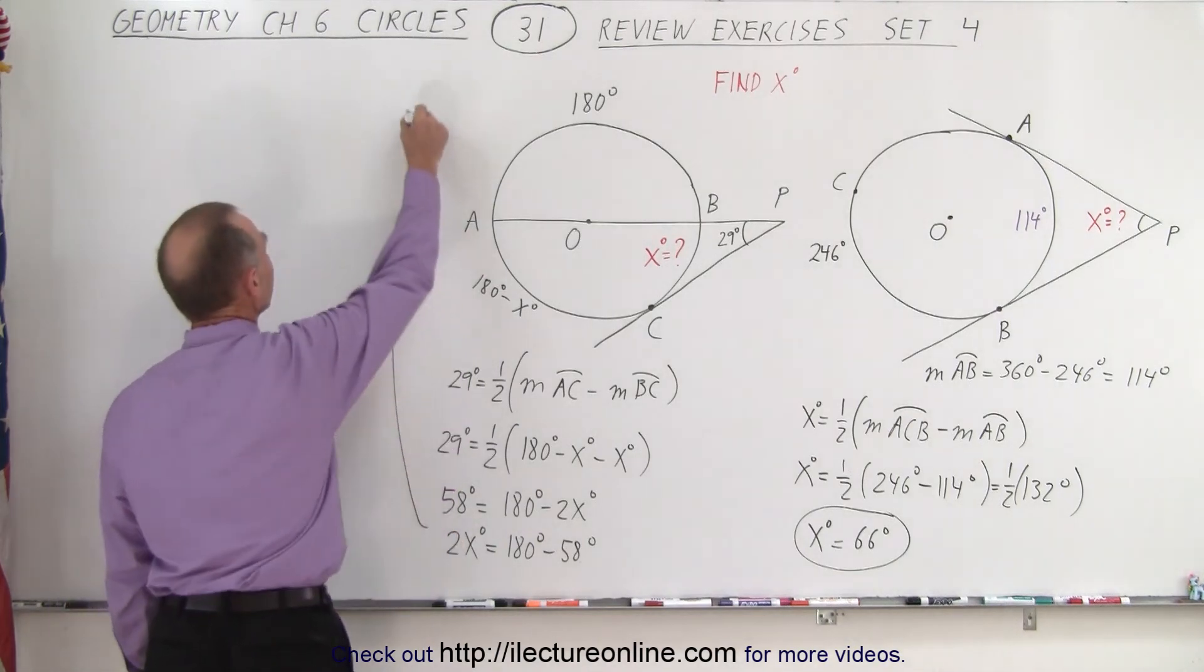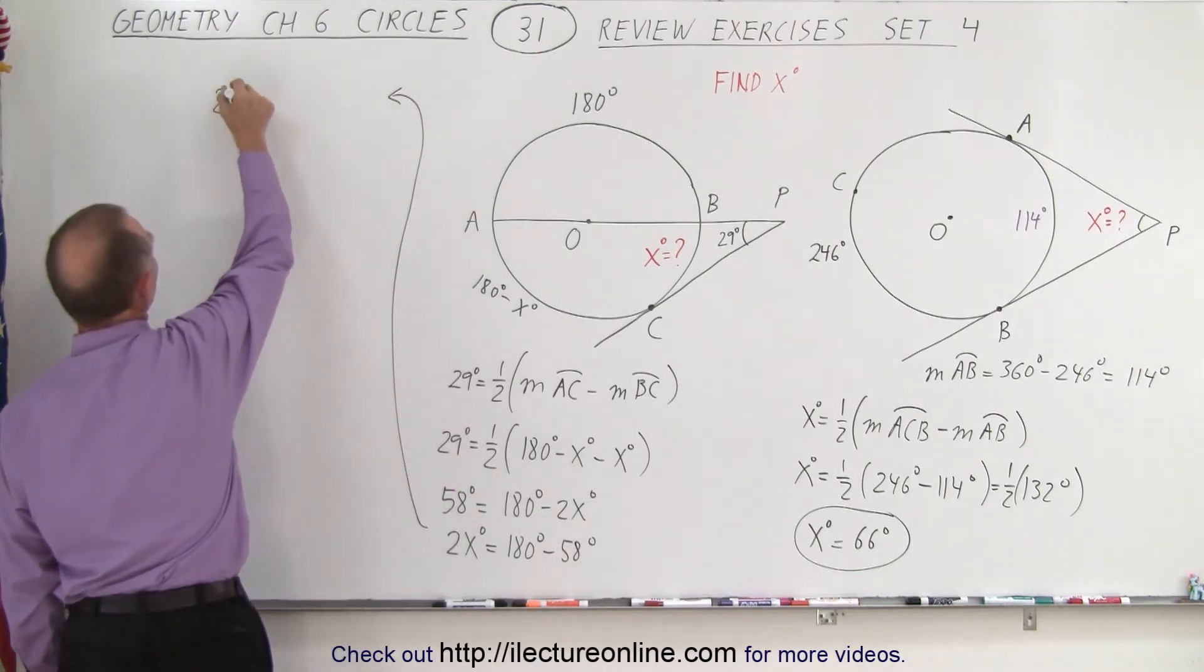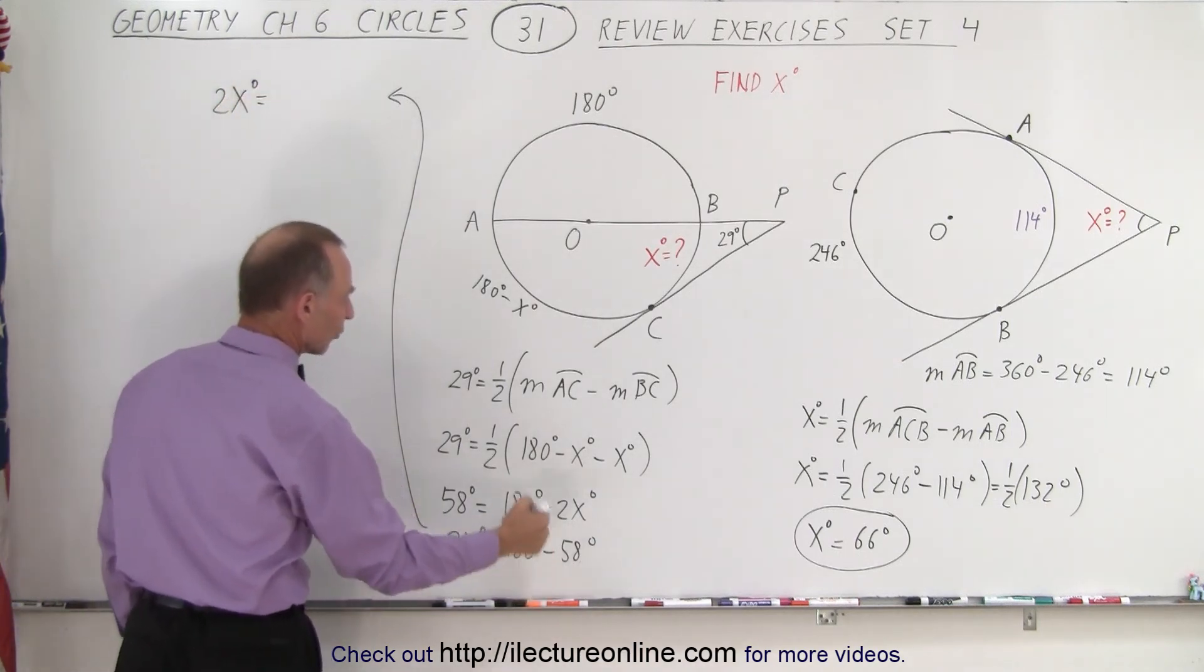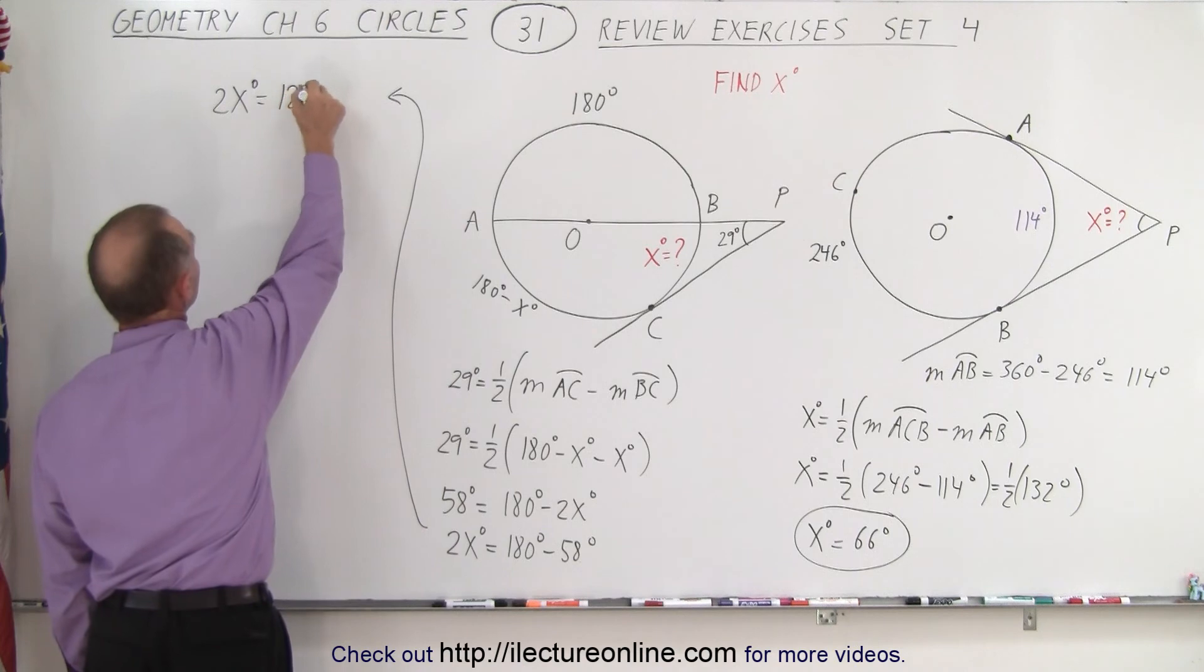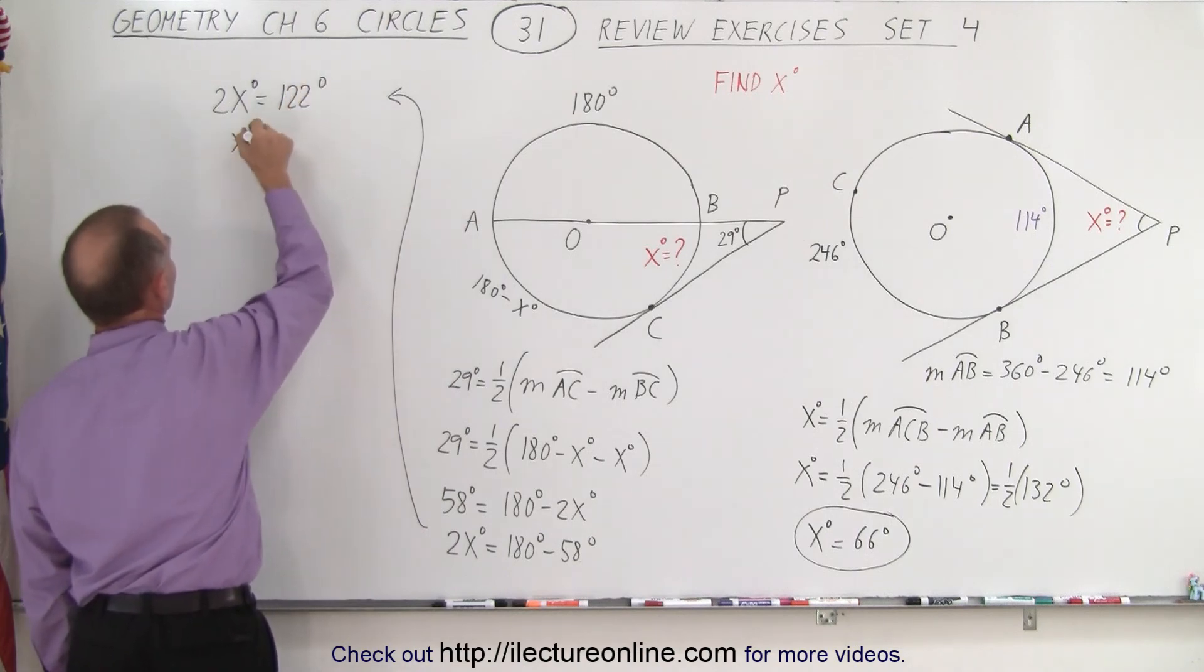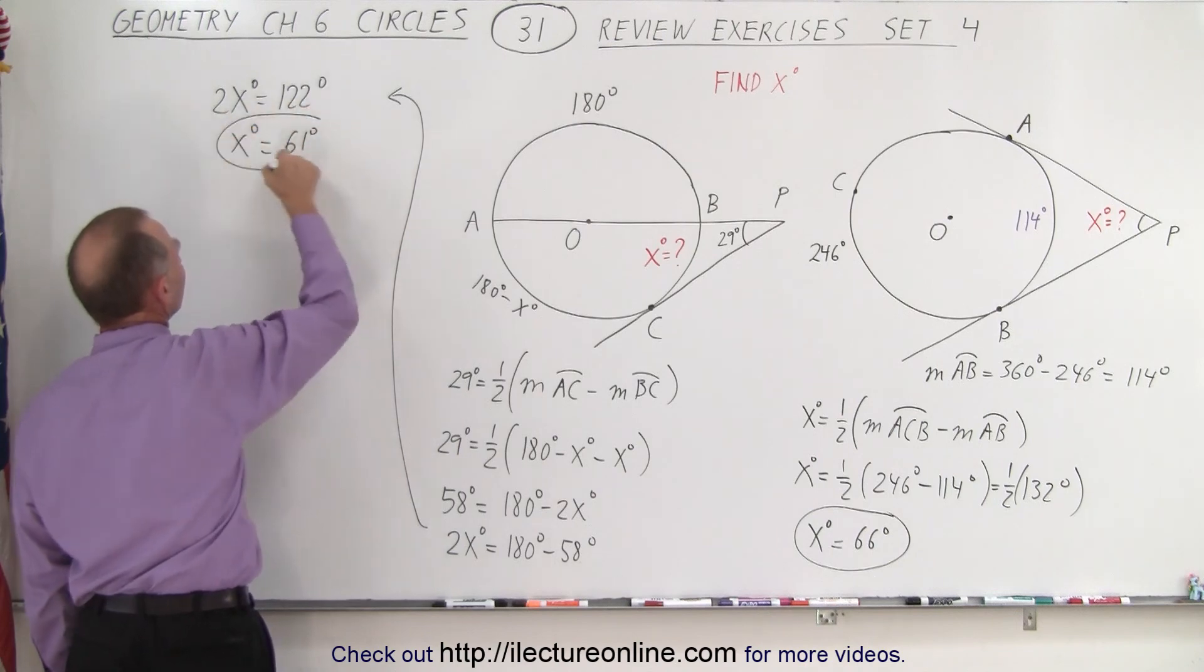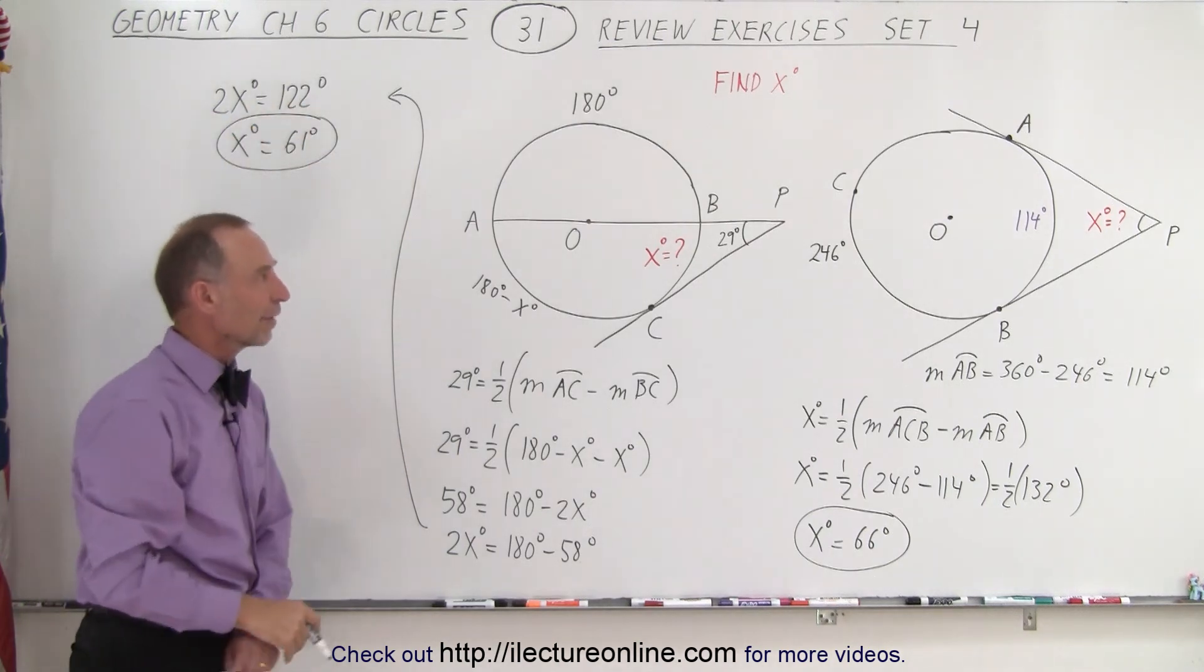So, that means we have 2 times x degrees is equal to 180 minus 58, that's 122. And so, therefore, divide both sides by 2, we get x degrees equals 61 degrees. And that's how we find the other value for x.